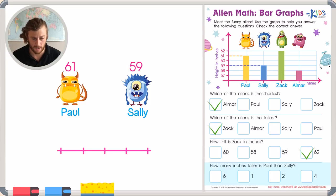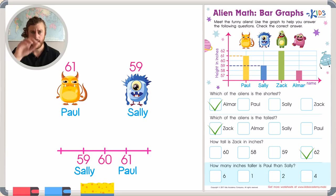I can also draw a number line starting from 59, which is Sally's height. Write the numbers in order until we reach Paul's height. So we'd write 59, 60, 61. We have Paul's height at 61. And then we can just make jumps until we reach the number. And we'll see how many jumps it takes to reach to Paul.